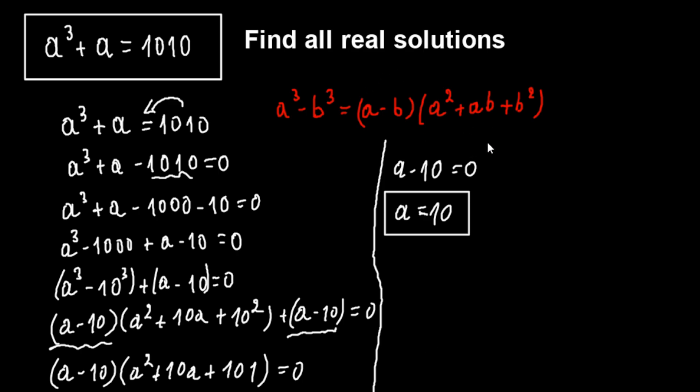Now let's see if we have another solution, a real solution. We have a to the second plus 10a plus 101 equals 0.